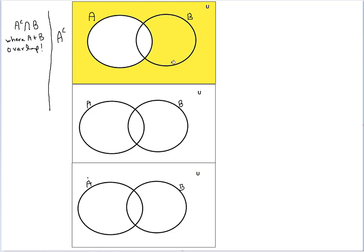So we're shading everything that is in the universal set but not in A, so A remains unshaded.